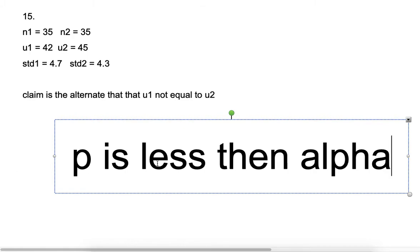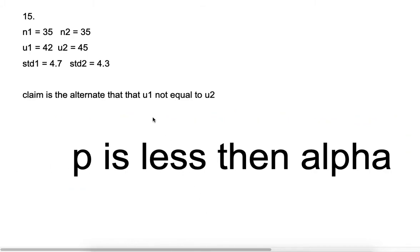And if our p is less than alpha, we reject H0. I always have to refer back to that. Our claim is with HA. We reject H0. There is enough evidence to support the claim that these two means are not equal. All right, thank you.